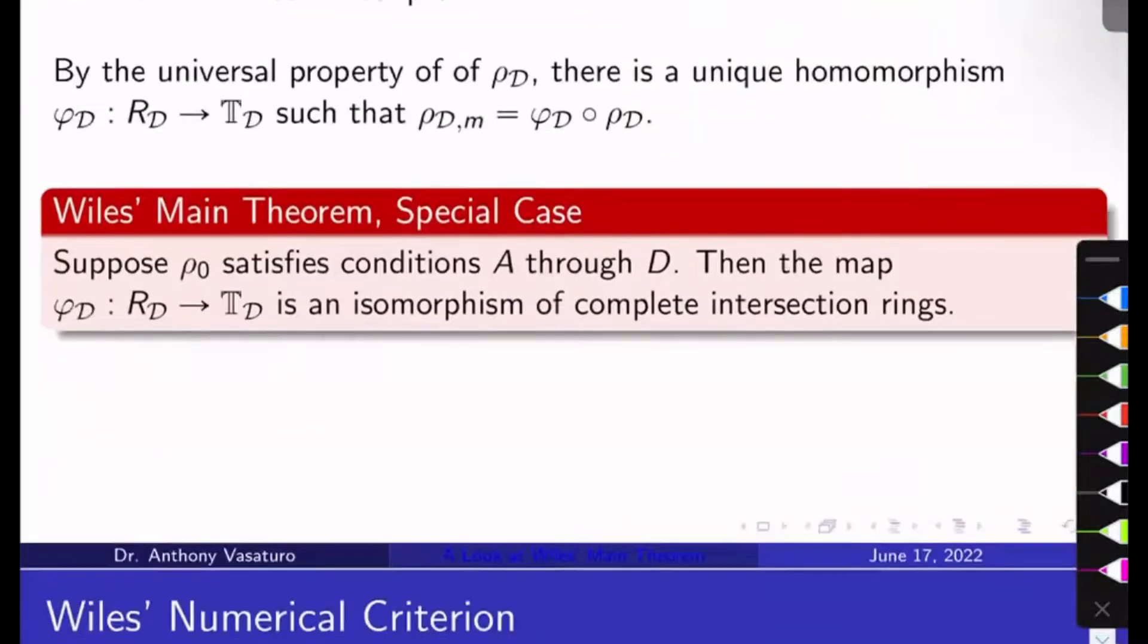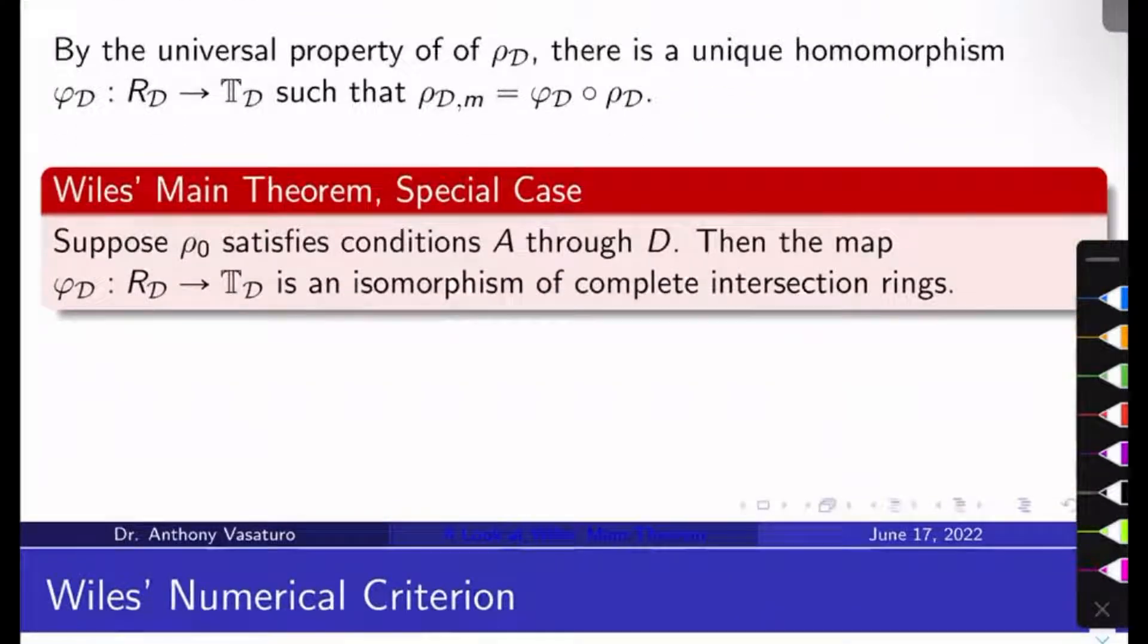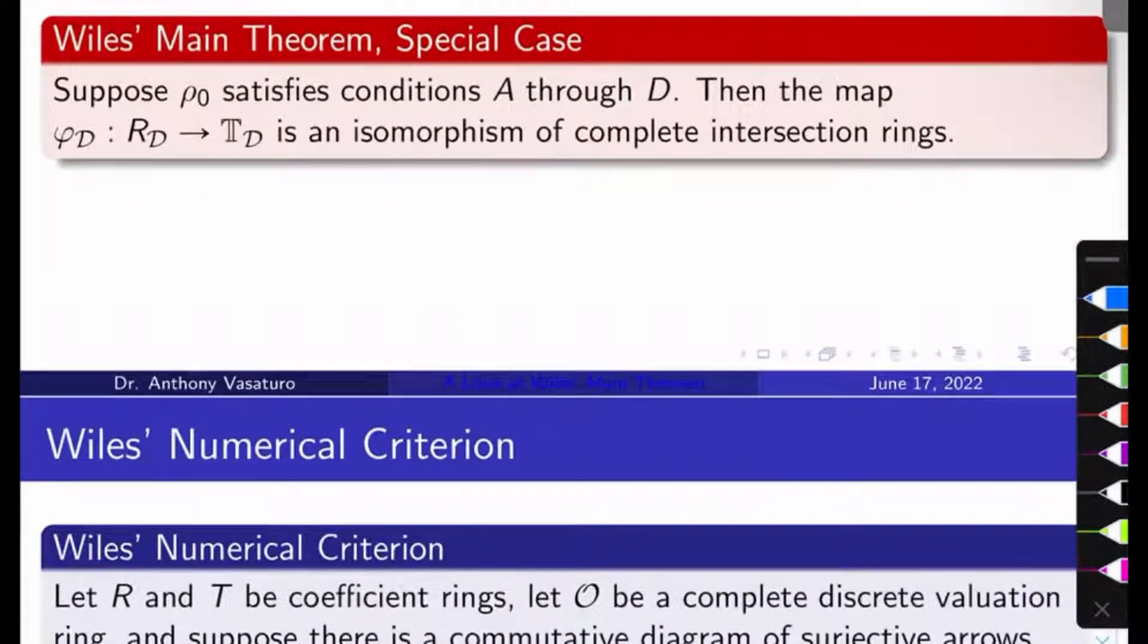And so here's the remarkable theorem of Wiles—a special case, the only case we need. Suppose rho-naught satisfies conditions A through D listed above. Then the map phi_D from RD to TD is an isomorphism of complete intersection rings. This is huge. If you've ever seen any pop documentaries or read any popular articles or books on Fermat's Last Theorem, you might have seen that there was a commutative algebra step called R equals T. That's this step.